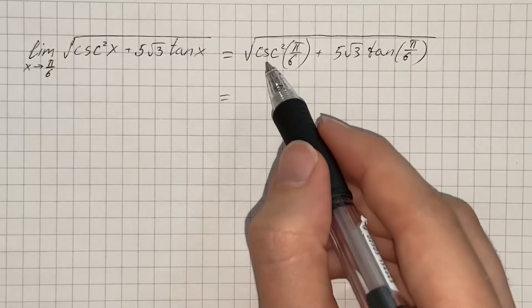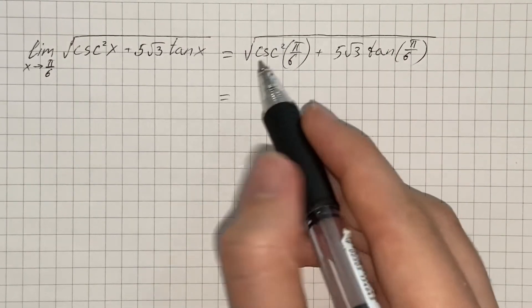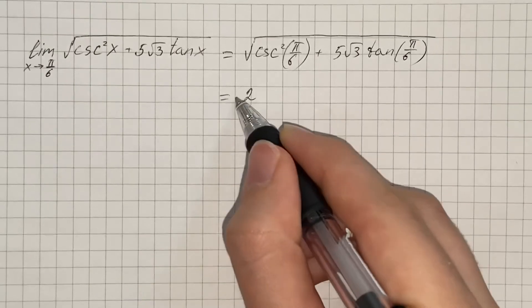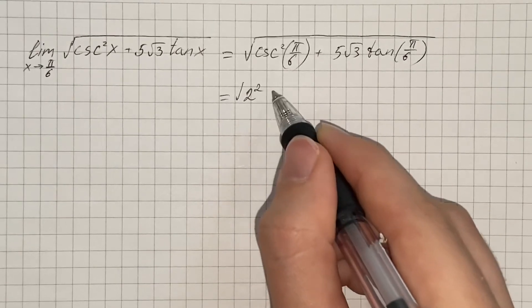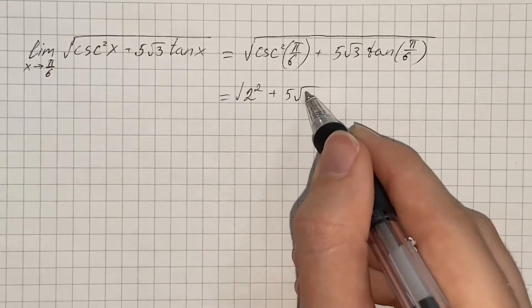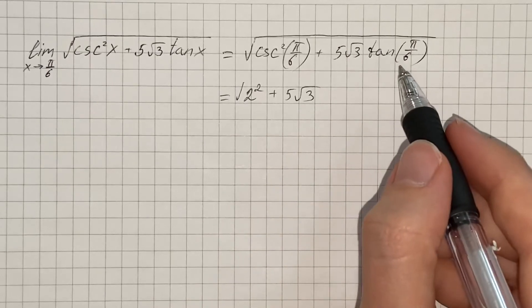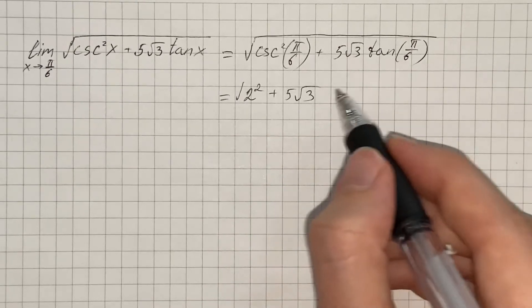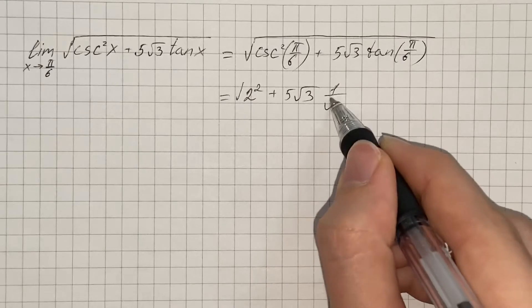So we know that cosecant of π/6 equals 2, so we get 2² plus 5√3, and tangent of π/6 equals 1 over √3.